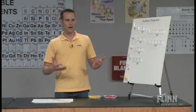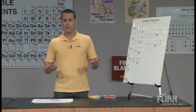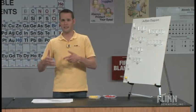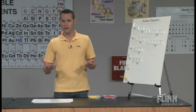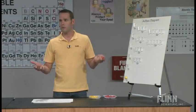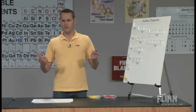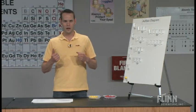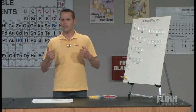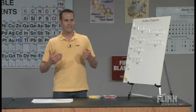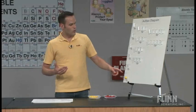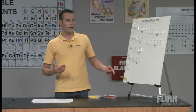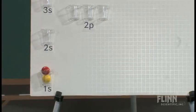We always occupy the lowest energy state possible — that's one of the fundamental ways nature operates. I tell students to think about what they do over summer: at the end of the day, the easiest mode is to sit on the couch and do nothing. You go to your lowest state of energy by default. So our lowest state of energy is at the bottom of the Aufbau diagram, the 1s, and we can fit up to two electrons there.